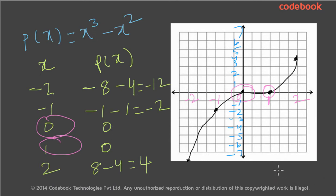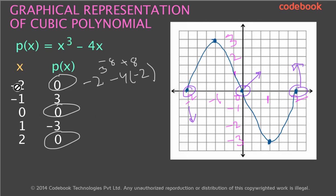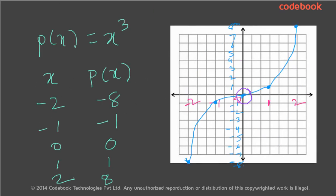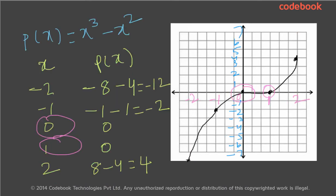So you have seen three different cases of cubic polynomials. In the first case, there are 3 zeros: minus 2, 0, and 2. In the second case, there is only 1 zero. And in the third case, there are 2 zeros. So in a cubic polynomial, based on the shape of the curve, there will always be a minimum of 1 root and a maximum of 3 roots — either 1, 2, or 3 roots. Whereas in a quadratic polynomial, based on the shape of that curve, it can have 0, 1, or 2 roots.